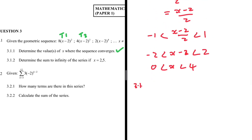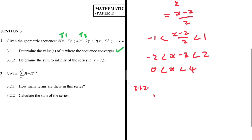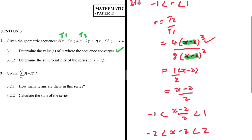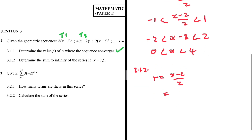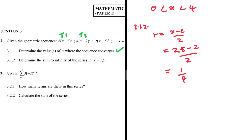For 3.1.2, we need to determine the sum to infinity of the series if x equals 2.5. We know r = (x minus 2) over 2. Substituting x = 2.5: (2.5 minus 2) divided by 2 gives r = 1 over 4.